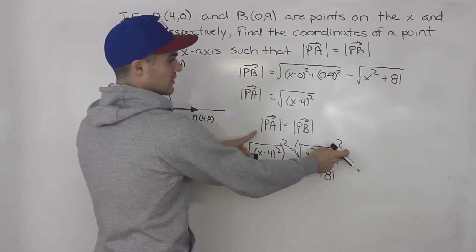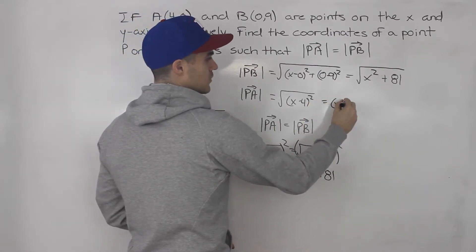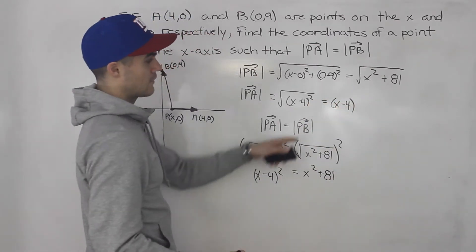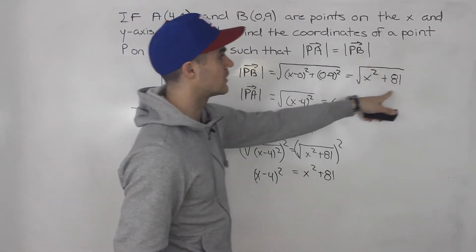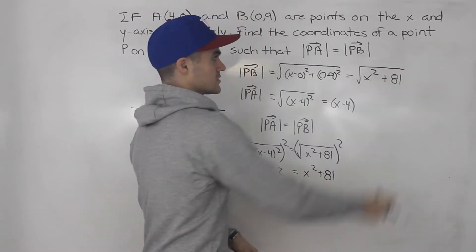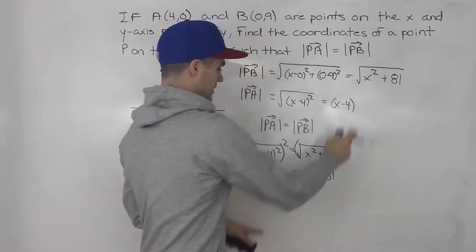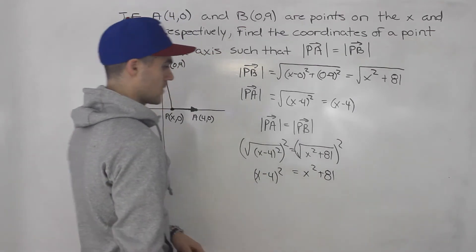That's why initially I didn't want to get rid of that square root. I would have rather got rid of it here because we could have had just (x - 4) here. But then we would have (x - 4) equals √(x² + 81) and we would have to get rid of this square root. So we would have to square both sides anyway. So either way works.